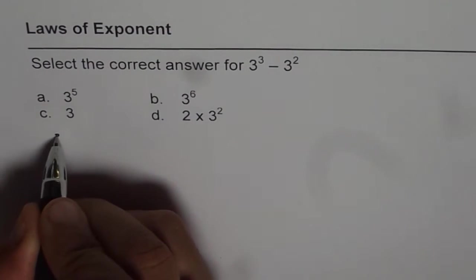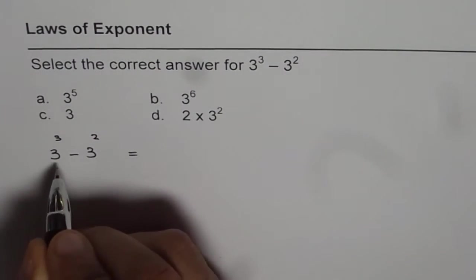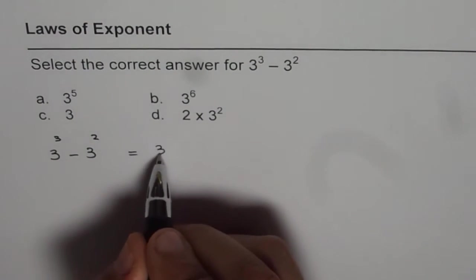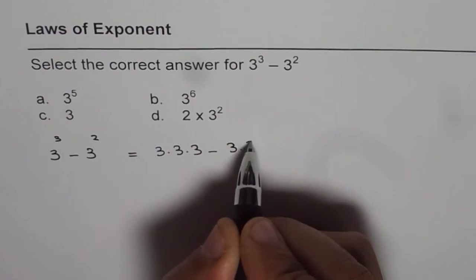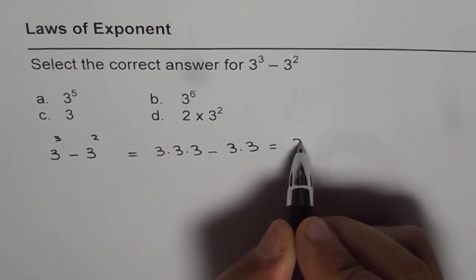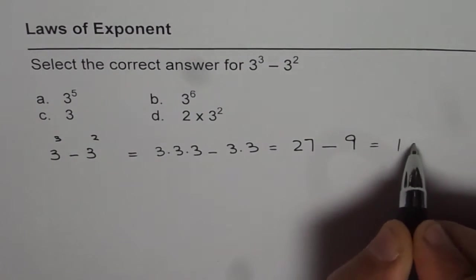So, it is a simple question, 3 cubed minus 3 squared. 3 cubed is 3 times 3 times 3, like this, right? Minus 3 squared is 3 times 3, which is 27 minus 9, which is number 18.